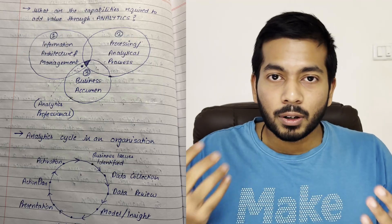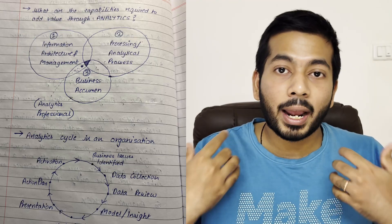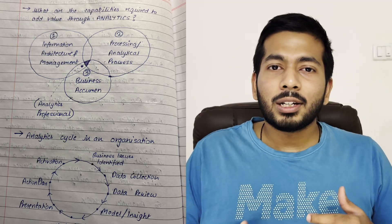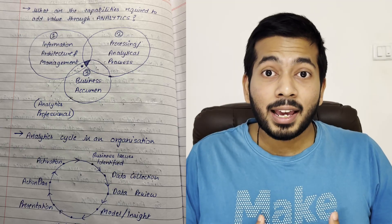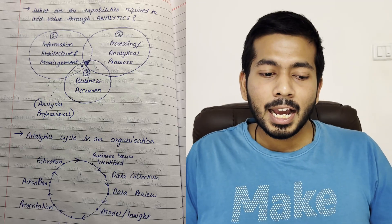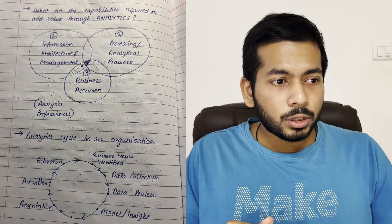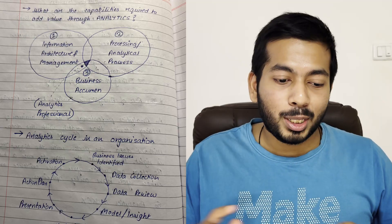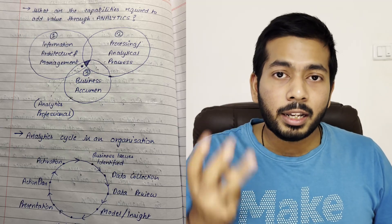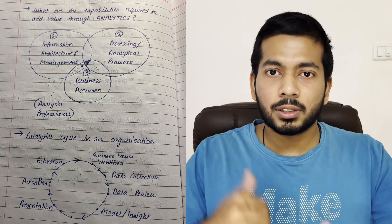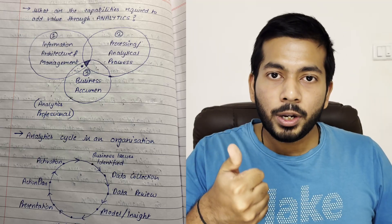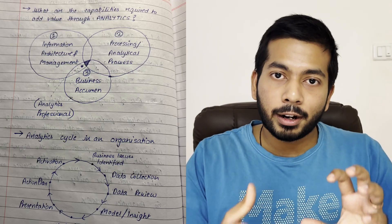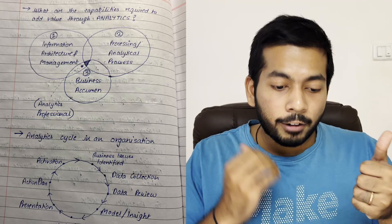The second thing I learned is what are the capabilities required to add value through analytics. Whenever I learned a new topic in school or during my graduation, nobody really spoke about how I could personally add value using what I had learned. But this course focuses on exactly how to add value in a corporate scenario, which was fantastic. There are three parts shown as a Venn diagram on screen. The first is Information Architecture and Management — understanding how we collect information and put it in a particular format that is understandable and accessible.